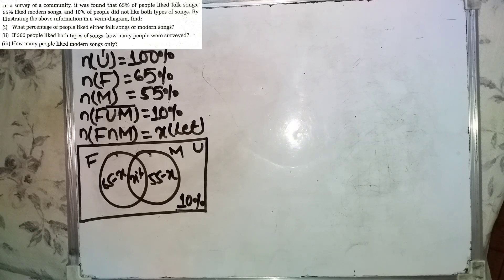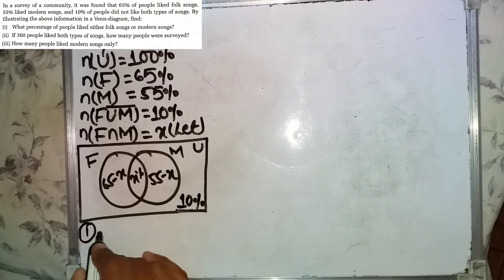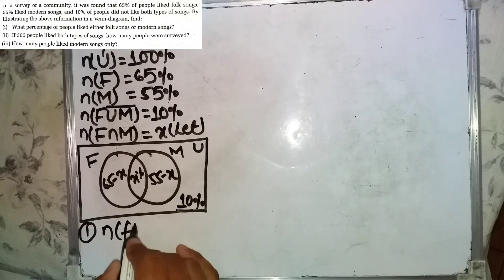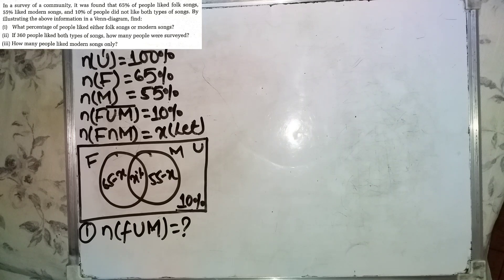Question number 1 asks what percentage of people liked either folk songs or modern songs. That means we need the union, N of F union M.